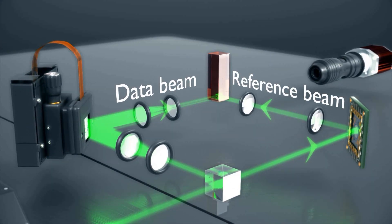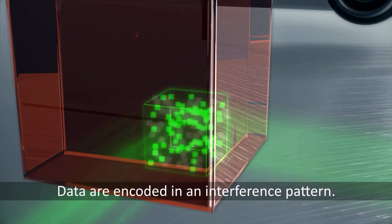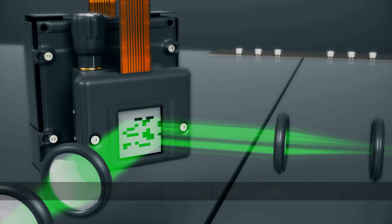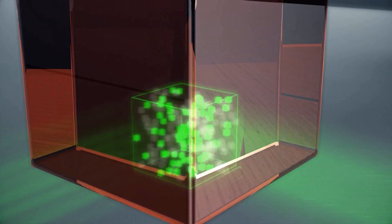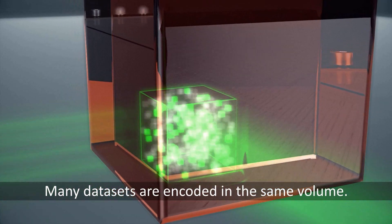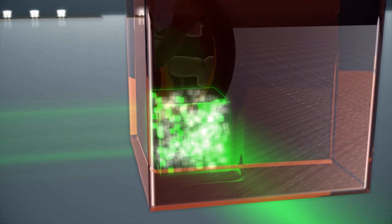We then combine that beam with a reference beam inside the lithium niobate crystal, and the data is encoded as the interference pattern. We can record multiple beams simply by changing the angle of this reference beam using a MEMS mirror. That allows us to record many data sets in the same volume.